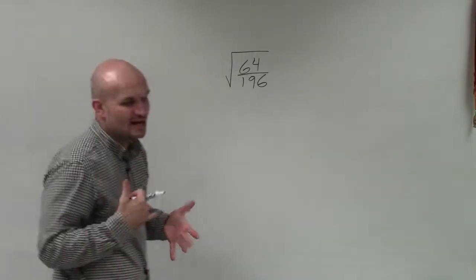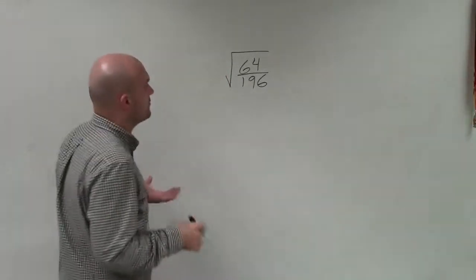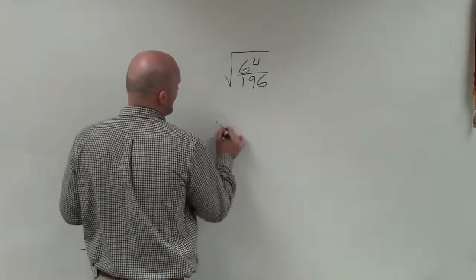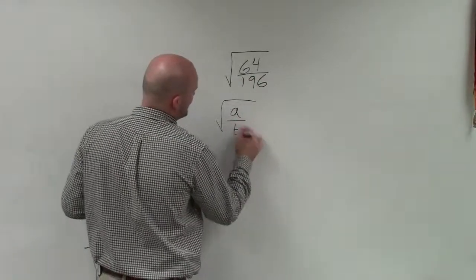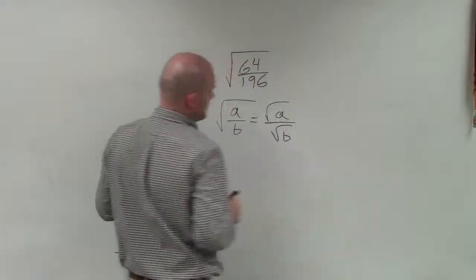In this case, we have it as a fraction, which I know will confuse a lot of students. But there's a very important property for radicals that we can use to help us solve this. That property is: when I have the square root of a/b, we can rewrite that as the square root of a over the square root of b.